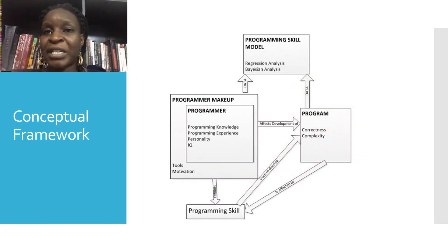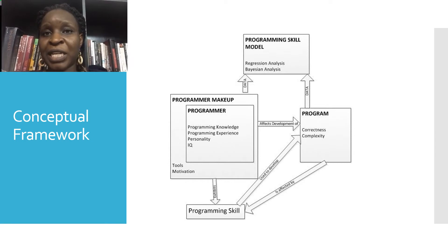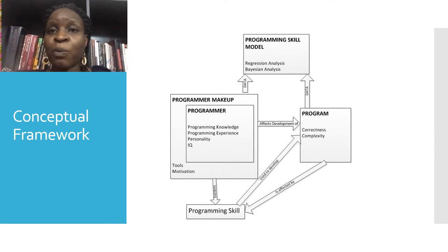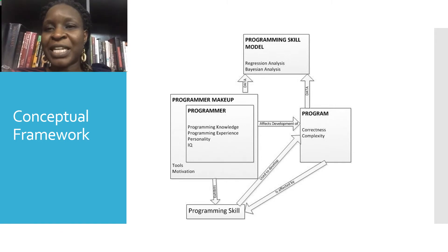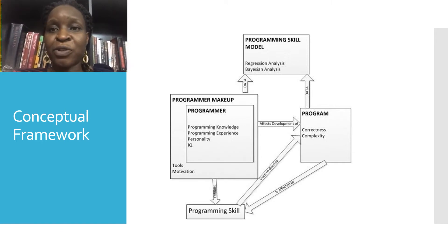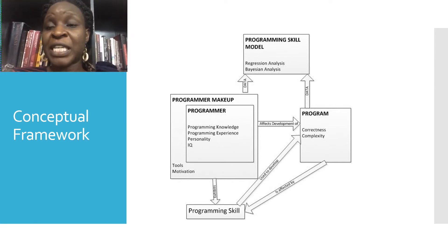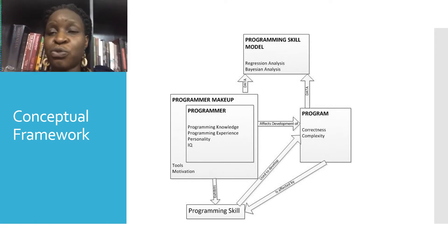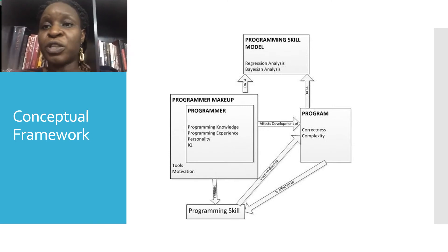So far, the research is constructed on the basis of a conceptual model that has been designed along the lines of the cost-effects model. We are asking the question: what causes programming skill? We're using that model to frame our thinking around this work because, according to the law of skill, you have to have skill before you can use it to produce anything. So the acquisition of skill comes before the use of skill.